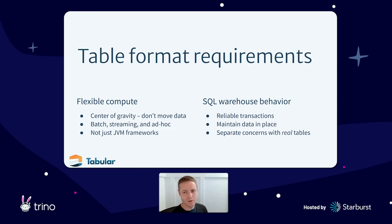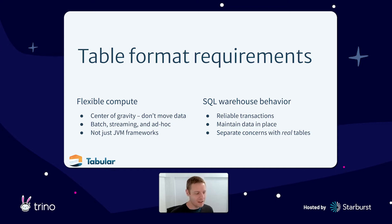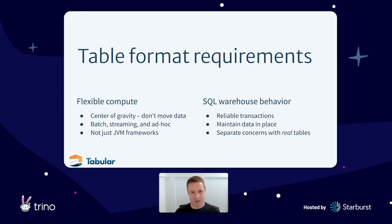There are basically two high-level things that everyone wants. Number one is flexible compute — that multi-engine future, where we can bring in multiple engines. It's very unlikely that any single engine or vendor is going to be able to do streaming, batch, and ML for the next 10 or 15 years. The second thing is SQL warehouse behavior — where tables are just SQL tables with reliable transactions and you can change them in place. We often overlook this if we're coming from the flexible compute world.